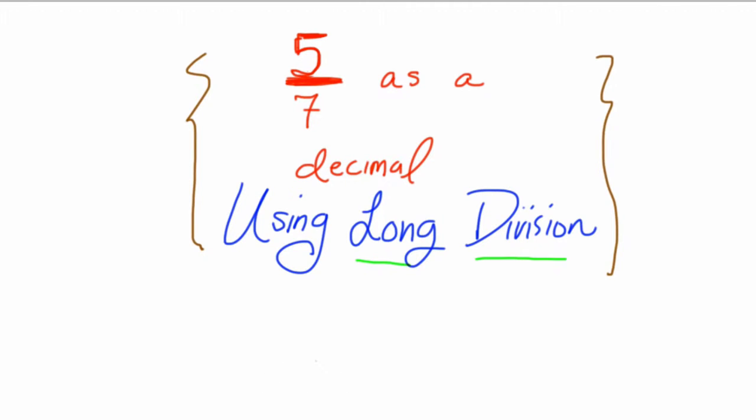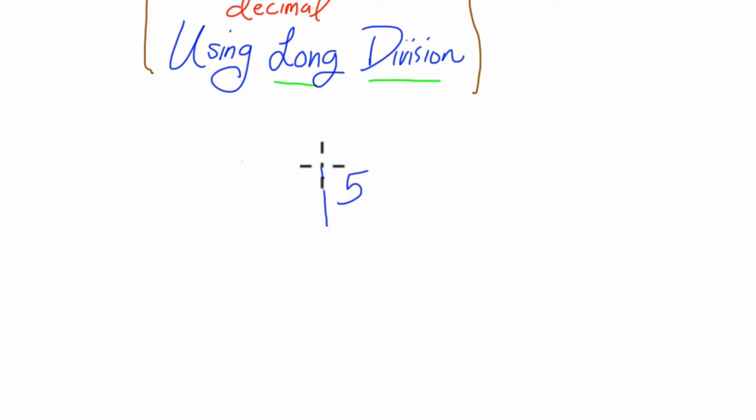And that just means we're taking our numerator, which in this case is 5, 5/7, and dividing that by the denominator, which is 7.